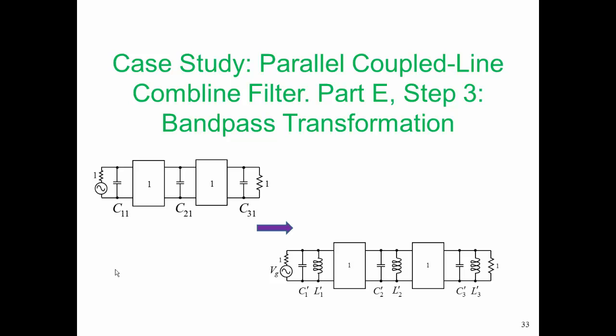Step three in our comb line filter design is the bandpass transformation. We want to go from our prototype shown on the left here, which just has capacitors and inverters, and replace those capacitors by resonators. In lumped element form, those resonators are parallel L and C elements, and we retain the inverters.